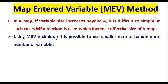Using MEV technique, it is possible to use a smaller map to handle more variables. For example, if we have 4 variables and use KMAP, we need a 4-variable KMAP with 16 cells. Instead, we can use a 3-variable KMAP with only 8 cells, and use another variable as the map entered variable. That is possible with the MEV method.